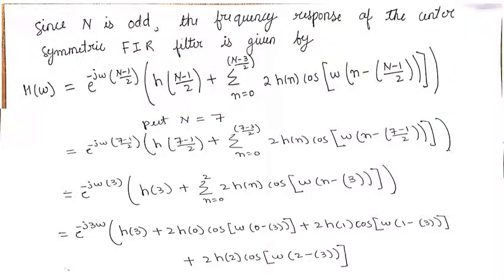After substituting the value of N as 7 and simplifying, we get this as the equation for H of omega.